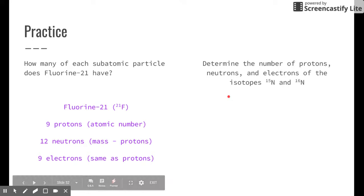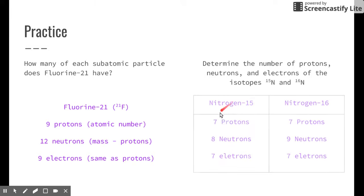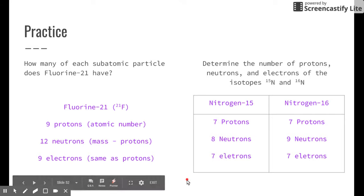Here's the last problem. Determine the number of protons, neutrons, and electrons of these two isotopes of nitrogen. Pause the video. Did you get it? Great. Here are the answers. Good luck, guys. Try the practice and let me know if you have any questions.